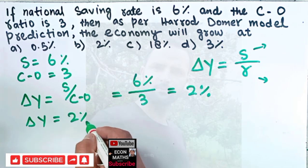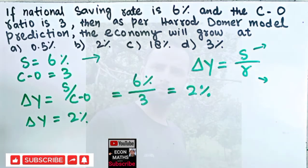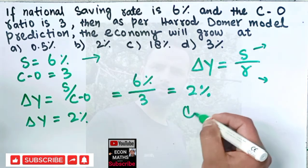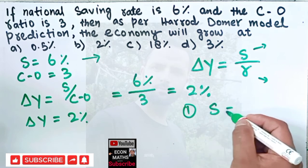Our change in GDP would be 2% if our national savings is 6% and capital output ratio is 3. In Harrod-Domar model, the first most important assumption was that savings equals investment - whatever is saved is invested.